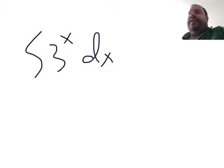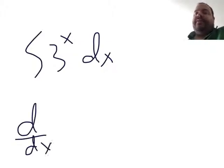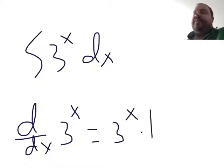It's a little different when you integrate other bases. So if you remember back to calc 1, if you took the derivative of 3 to the x, it was 3 to the x times ln of 3.